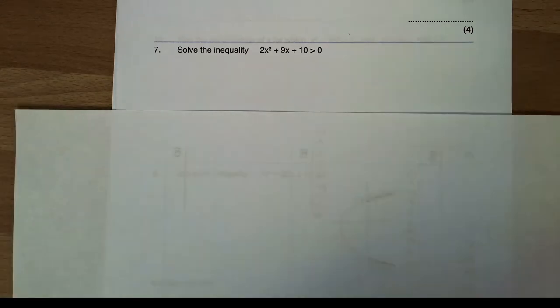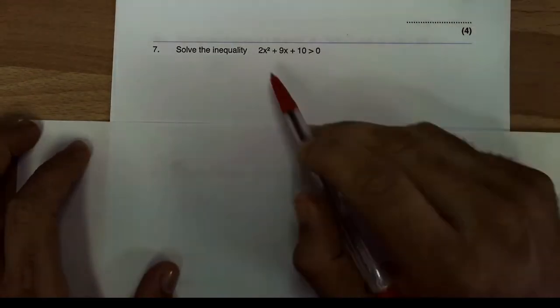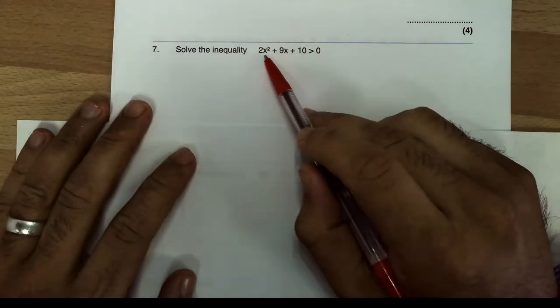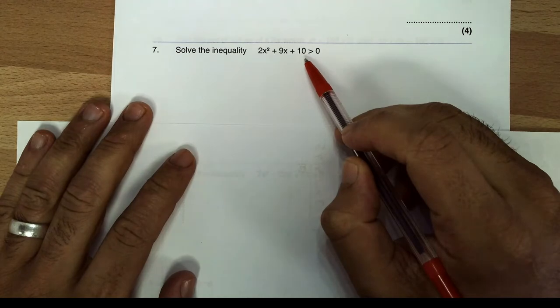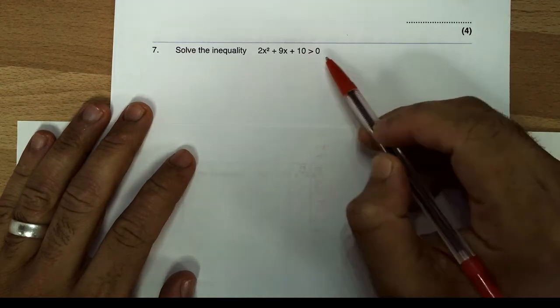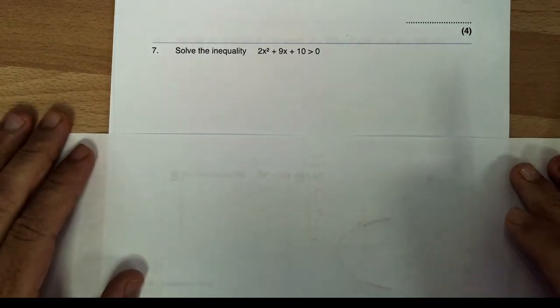Now, what about when there is a coefficient of x squared? As you can see in this example, the question says 2x squared plus 9x plus 10 is greater than zero.